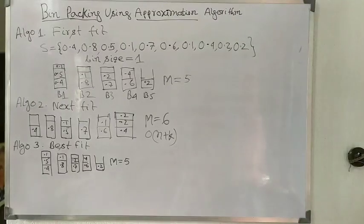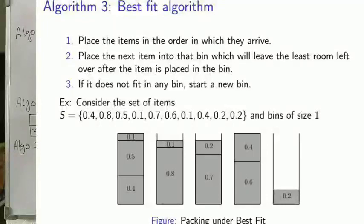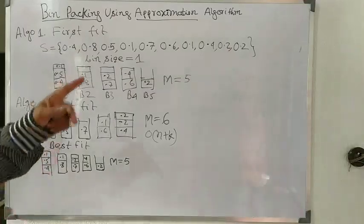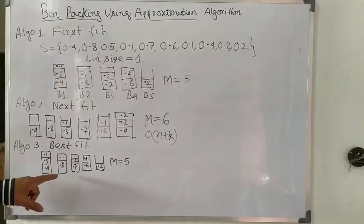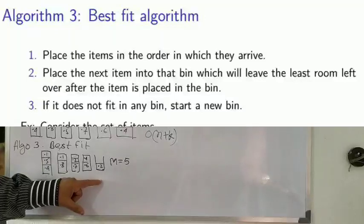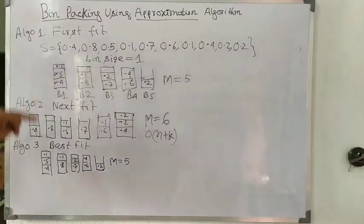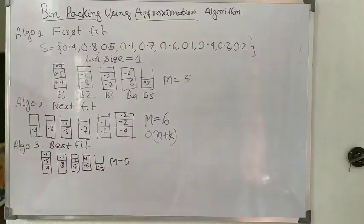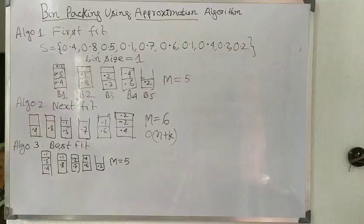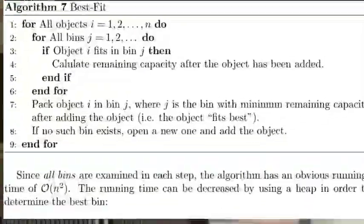Now look at the Best Fit algorithm. Step one is the same as before. Step two: place the next item into the bin which will leave the least room left after the item is placed. Step three: if it does not fit in any bin, start a new bin. Applying this algorithm, the resulting bins are similar to First Fit — five bins. So Best Fit and First Fit give nearly the same result, and the complexity is also O(n²).